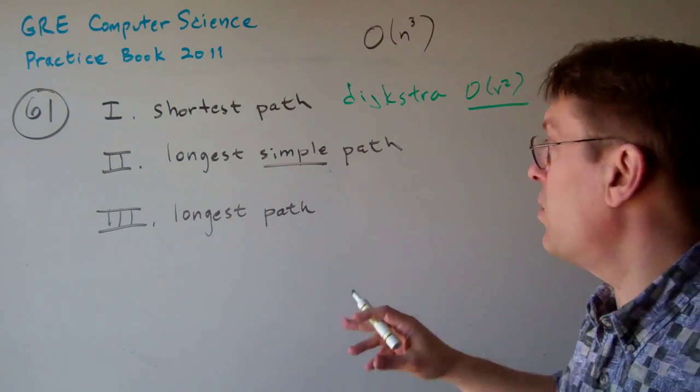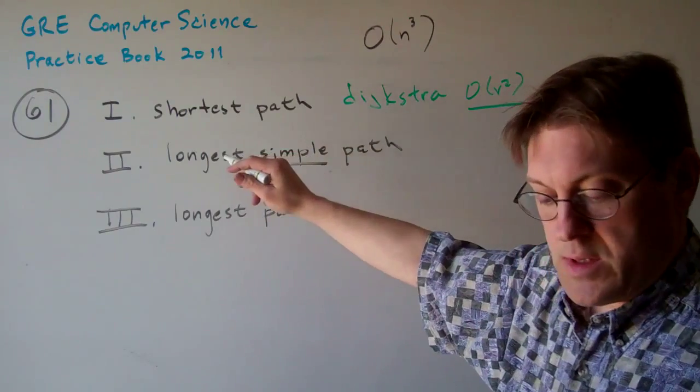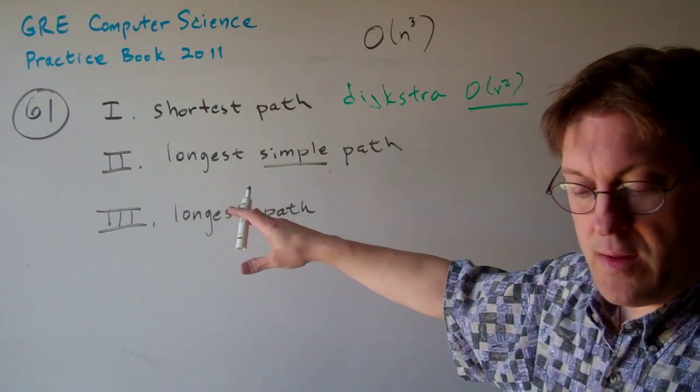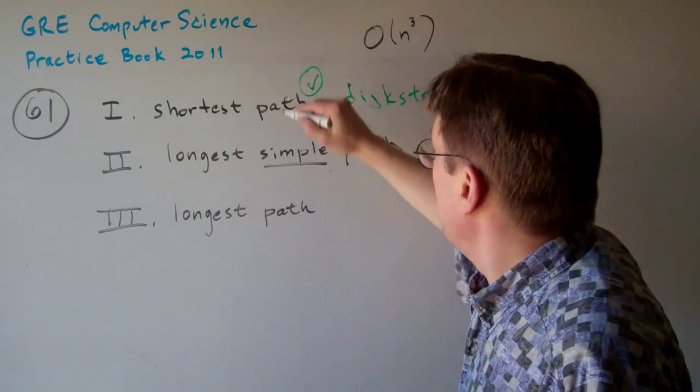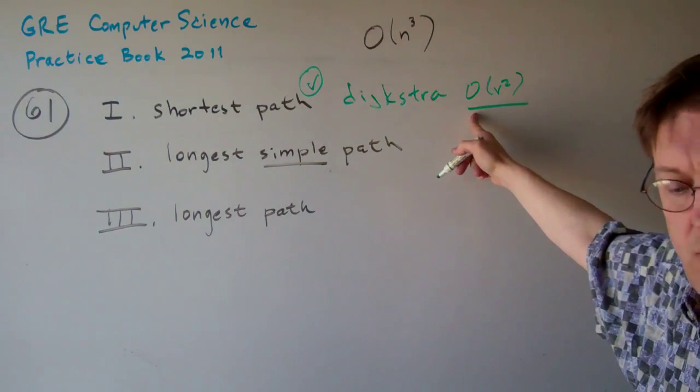Otherwise, of course, it gives you a problem. But this says there's non-negative integer weights, so that's not an issue. So this one we know has got to be true. It's solved well within O of n cubed.